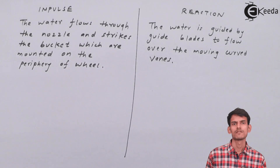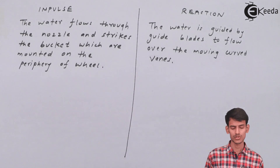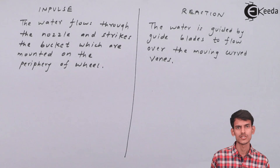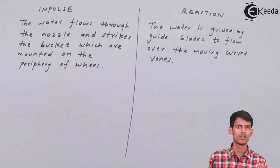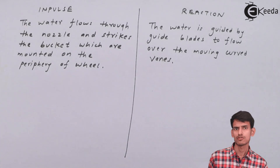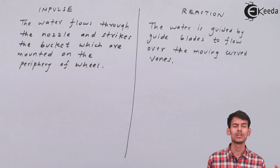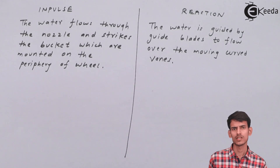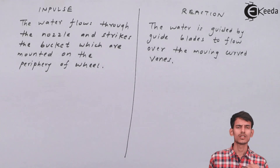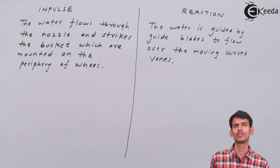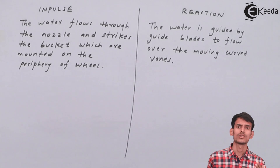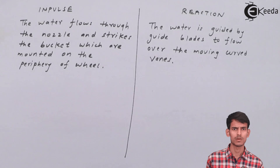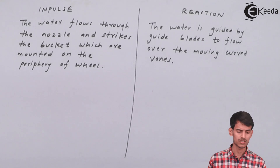The third difference is about how water flows. In a Pelton wheel, water comes out of the nozzle and strikes the buckets, which are of elliptical shape mounted on the periphery of the wheel. The wheel then starts rotating, generating power. In a reaction turbine, water first goes to the guide vanes, glides over them with no friction, then strikes the moving vanes. The guide vanes give proper direction so water strikes the moving blade at the correct angle for maximum efficiency.